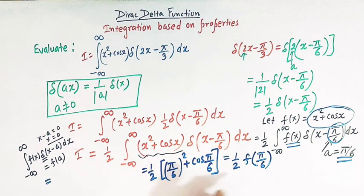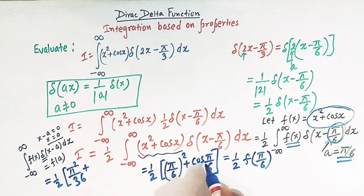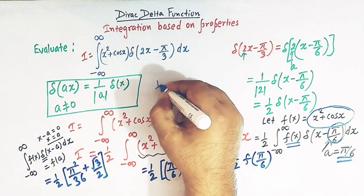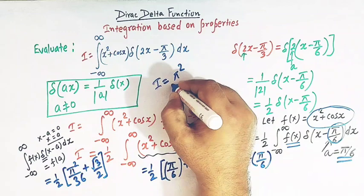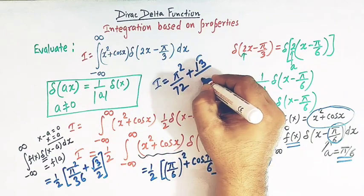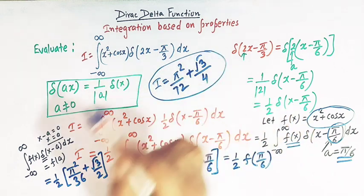Evaluating the expression: (pi by 6) squared equals pi squared over 36, and cos(pi by 6) equals cos 30 degrees equals square root of 3 over 2. Multiplying through by one-half, the final value of the integral I is pi squared over 72 plus square root of 3 over 4.